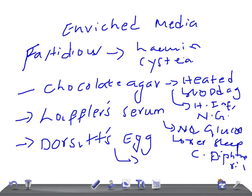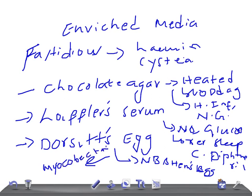Dorset's egg contains nutrient broth and hen's egg — that's why it's called Dorset's egg. In this medium, Mycobacterium and other delicate organisms can be grown. So in enriched media we have three types: chocolate agar, Loeffler's serum, and Dorset's egg. In chocolate agar we grow H. influenzae and Neisseria gonorrhoeae; in Loeffler's serum we grow Corynebacterium diphtheriae; and in Dorset's egg we grow Mycobacterium and other delicate organisms.